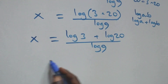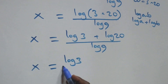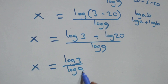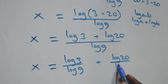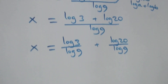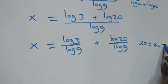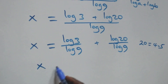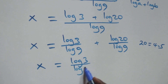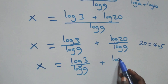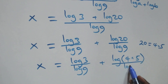Then from here, 20 can be expressed as 4 times 5. We separate this into two fractions: x equals log 3 over log 9 plus log 20 over log 9, which becomes x equals log 3 over log 9 plus log(4 × 5) over log 9.